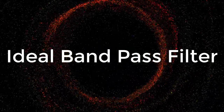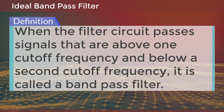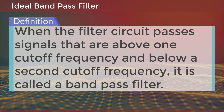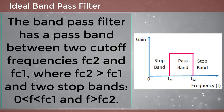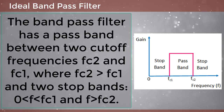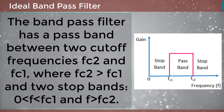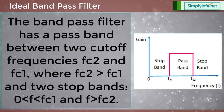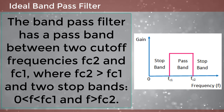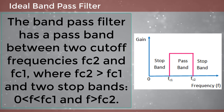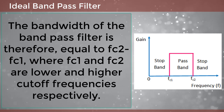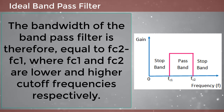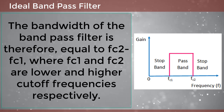Now let's look into the ideal band pass filter. When the filter circuit passes signals that are above one cutoff frequency and below a second cutoff frequency, it is called a band pass filter. The band pass filter has a pass band between two cutoff frequencies FC2 and FC1, where FC2 is greater than FC1, and two stop bands: 0 to FC1 and above FC2. The bandwidth of the band pass filter is therefore equal to FC2 minus FC1, where FC1 and FC2 are the lower and higher cutoff frequencies respectively.